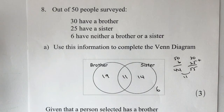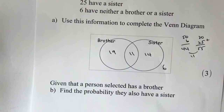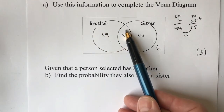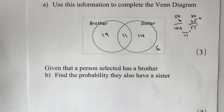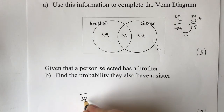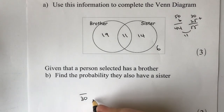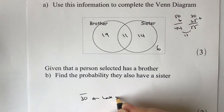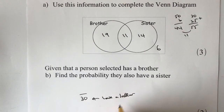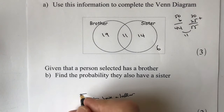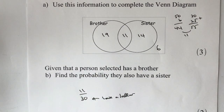Now let's look at the next part. Given that a person selected has a brother, we're looking at this group of people — the 19 plus 11 equals 30. The probability that they also have a sister is represented by the central part of the Venn diagram, which is 11 out of 30. That answers this particular question.